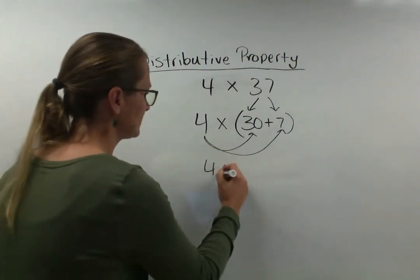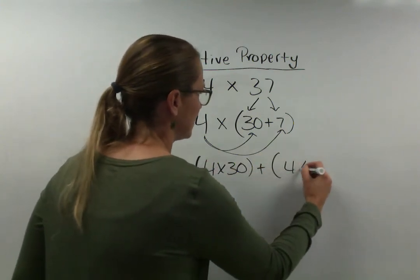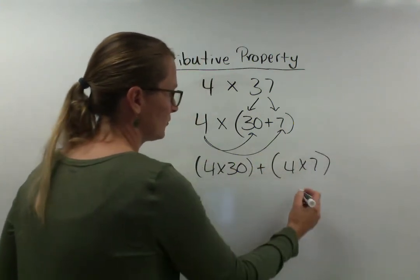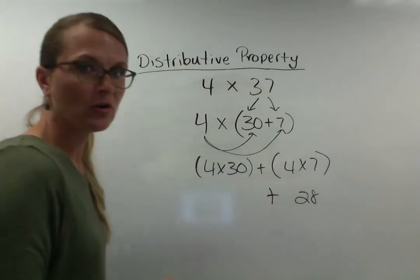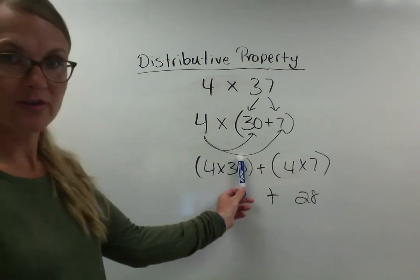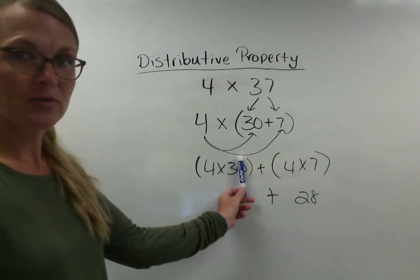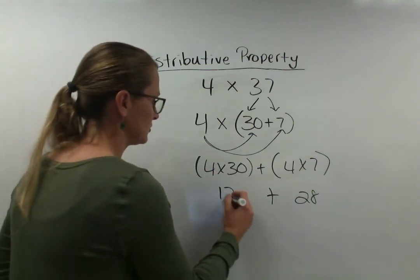So I get 4 times 30 and then I'm going to do 4 times 7. 4 times 7 is 28. 4 times 30 may look hard. But there's this really cool trick which I think you guys know. You can ignore the 0 for now. 4 times 3 is 12. And then you add the 0 to the end. So it's 120.